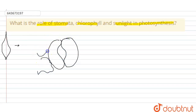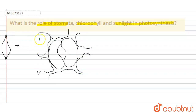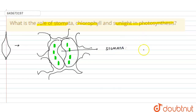Along with the bean-shaped guard cells, accessory cells are also present. Inside these bean-shaped guard cells, we have small structures called chloroplasts. The bean-shaped guard cells have an opening which is called the stomata.